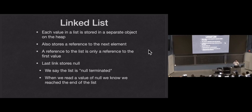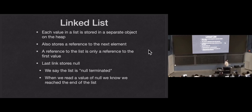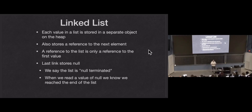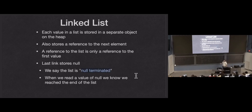The last element in the linked list is going to store null in the field where it would store its reference to the next link in the list. Null is our programmer way of saying 'nothing' or 'the lack of a reference.' If any variable can store a reference and stores null instead, that means it's not storing a reference to anything. For example, if you declare a variable of object type like 'Player p1;' without assigning it, it's initialized to null. Null means the lack of a reference — there should be a value here, but we don't have one.